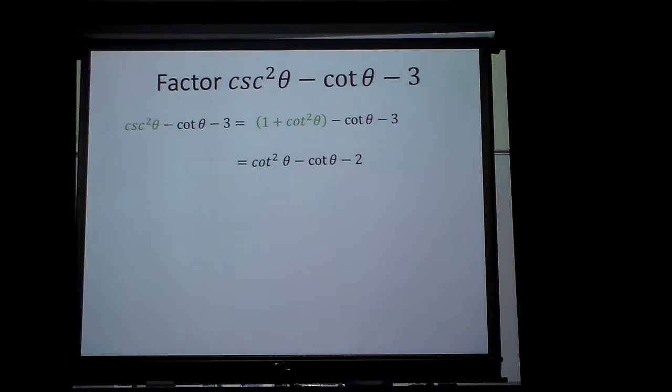Now I can treat this just like I would if I had x squared minus x minus two. The factors of two are just two and one, which if I take x minus two times x plus one and FOIL it, I would get this.